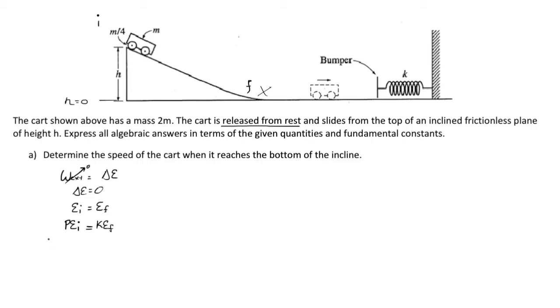Common situation where potential energy initial equals kinetic energy final. The definition of potential energy is mgh, where h is the initial height here, and the kinetic energy definition is one half mv squared. That v is the speed that we are looking for. Notice that we can cancel out the masses.